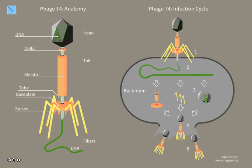Bacteriophages may have a lytic cycle or a lysogenic cycle, and a few viruses are capable of carrying out both. With lytic phages such as the T4 phage, bacterial cells are broken open and destroyed after immediate replication of the virion. As soon as the cell is destroyed, the phage progeny can find new hosts to infect. Lytic phages are more suitable for phage therapy. Some lytic phages undergo a phenomenon known as lysis inhibition, where completed phage progeny will not immediately lyse out of the cell if extracellular phage concentrations are high.